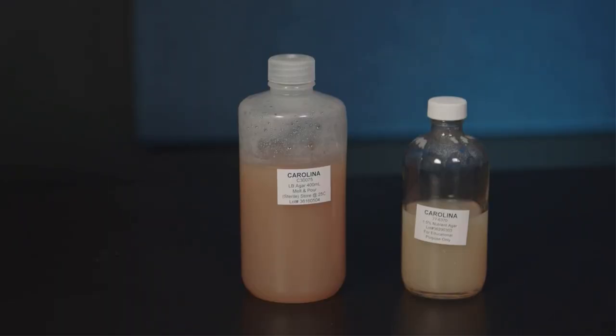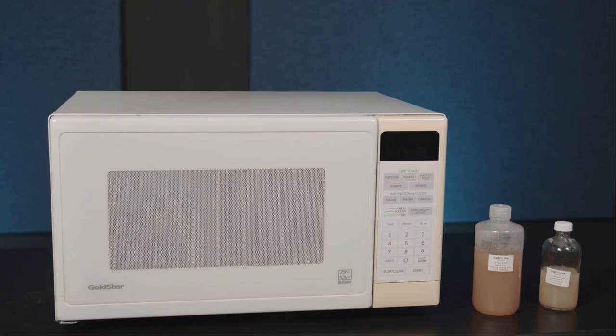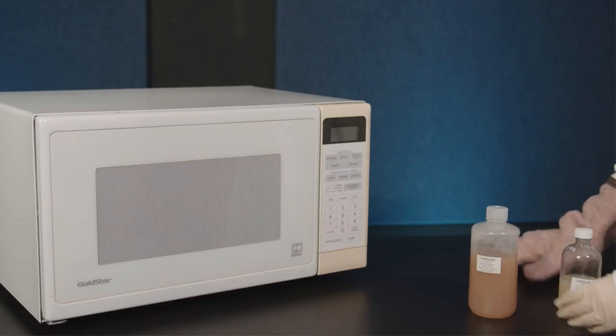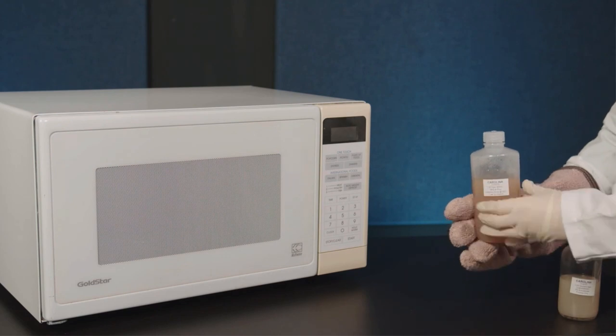Bottles of pre-prepared agar for making media plates can be melted in two different ways. They can be melted in a microwave oven or in a boiling water bath. Regardless of the method used, remember that agar needs to remain sterile.